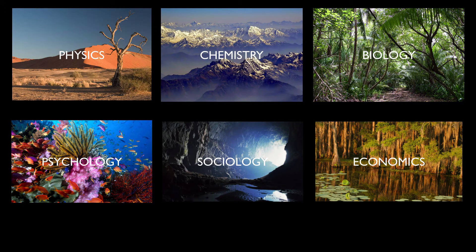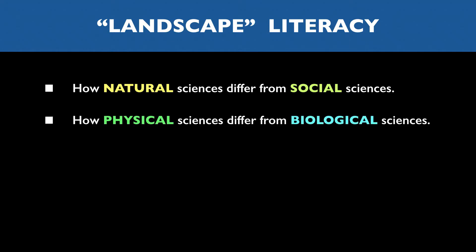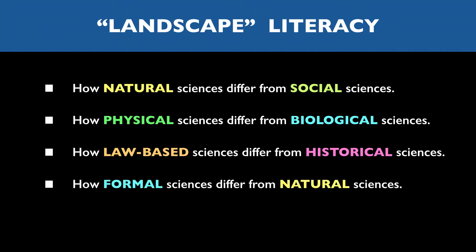So just to back away from the metaphor a bit, a person who's literate in science should be able to tell you something about how natural sciences differ from social sciences, how physical sciences differ from biological sciences, how law-based sciences like physics differ from historical sciences like evolutionary theory or geology, how formal sciences like computer science differ from natural sciences, and so on. These aren't particularly hard questions to answer. You don't need to know much detailed science to gain some kind of understanding of how physics and biology differ from one another.